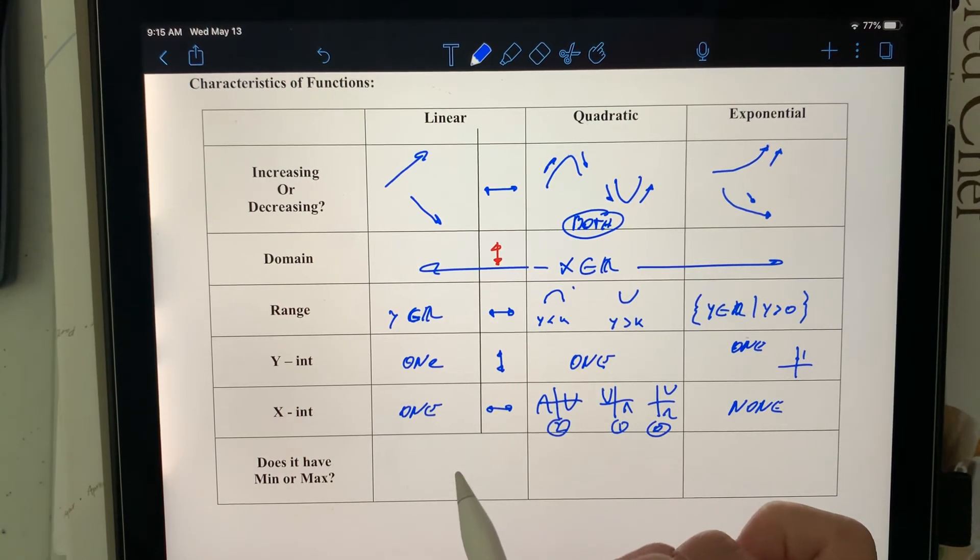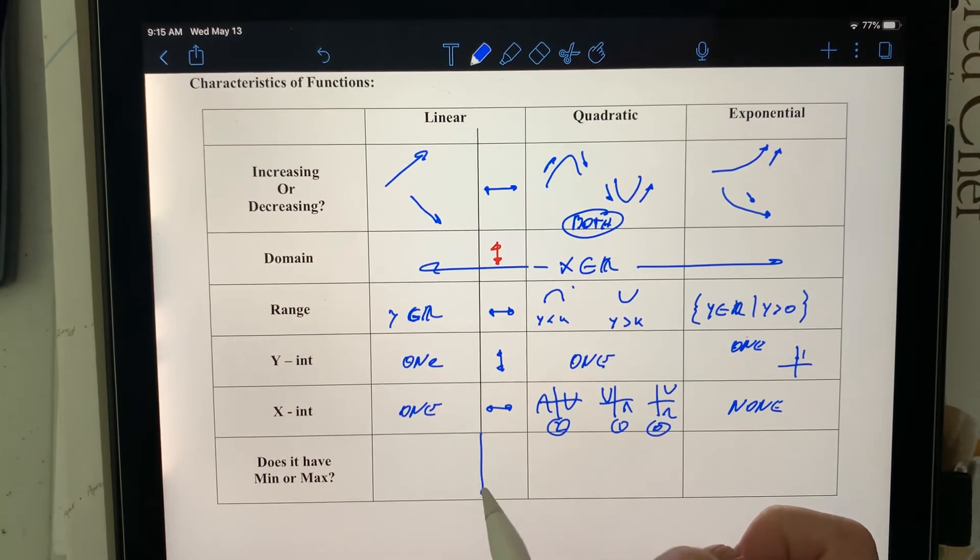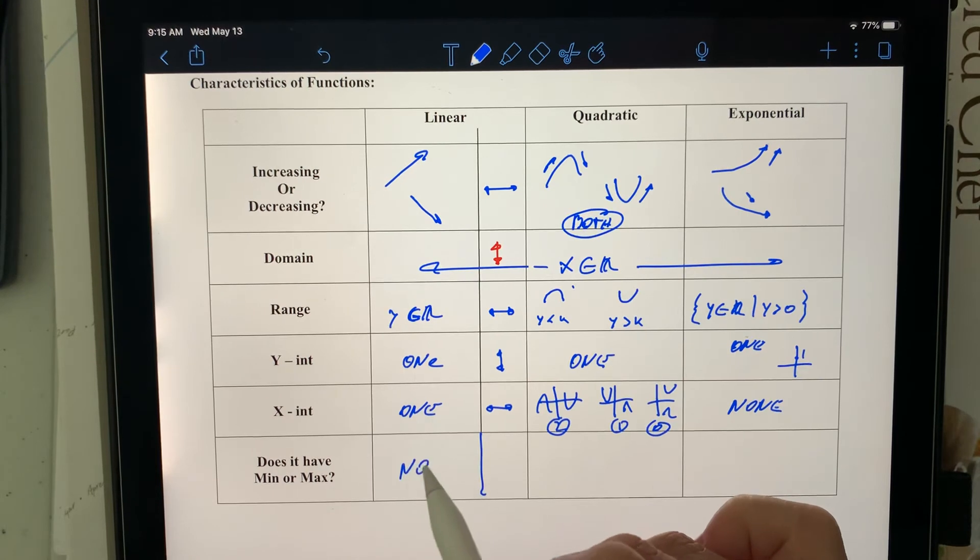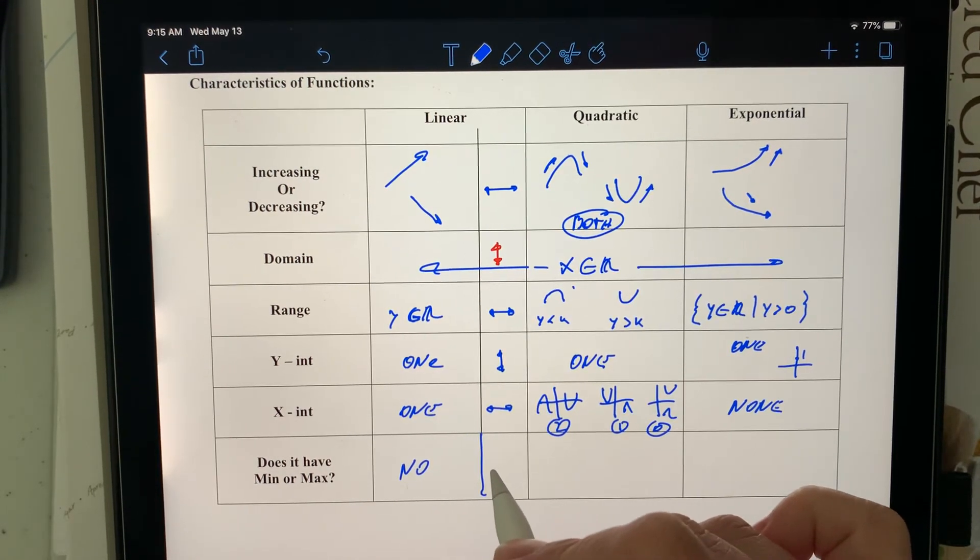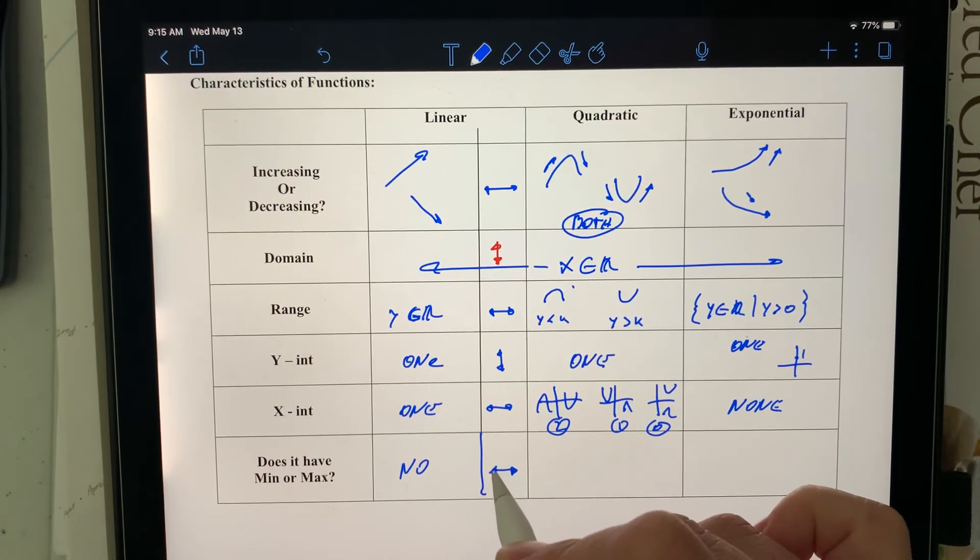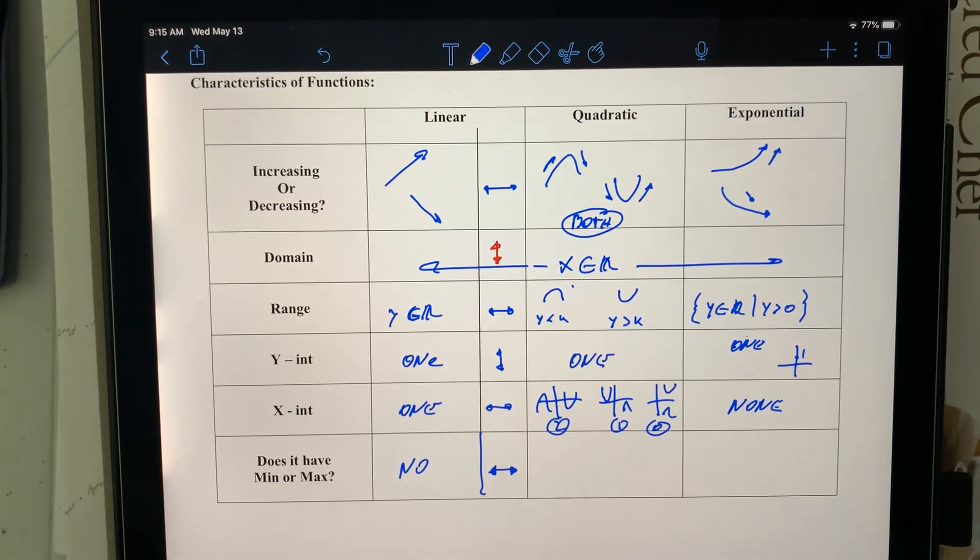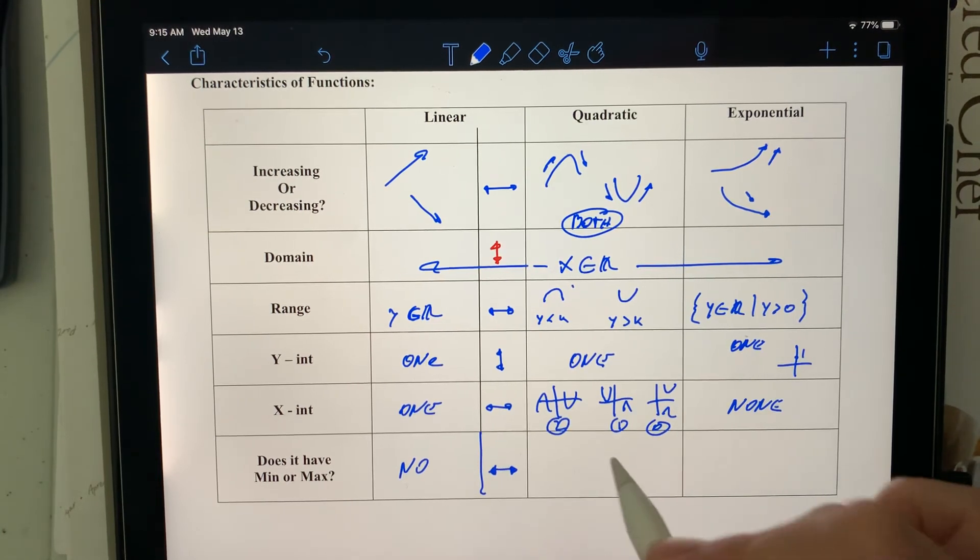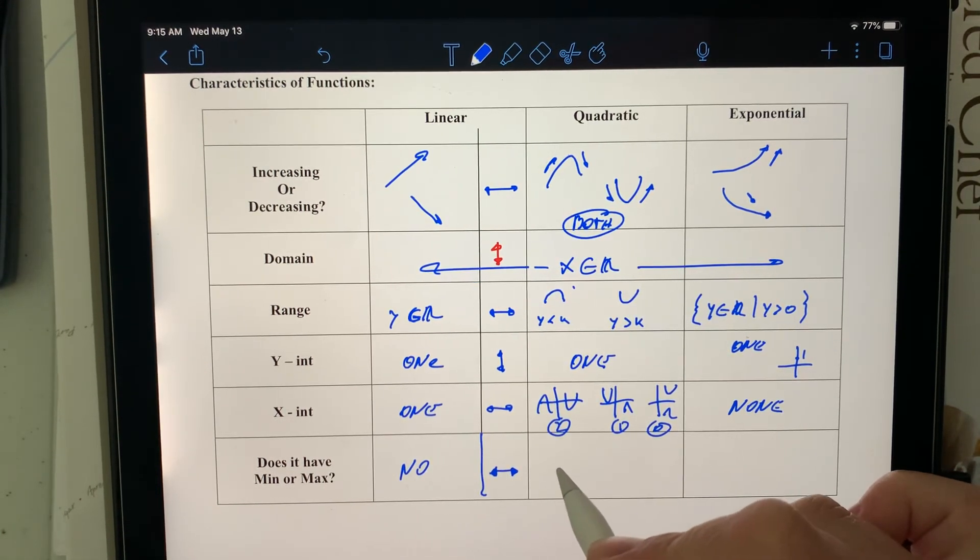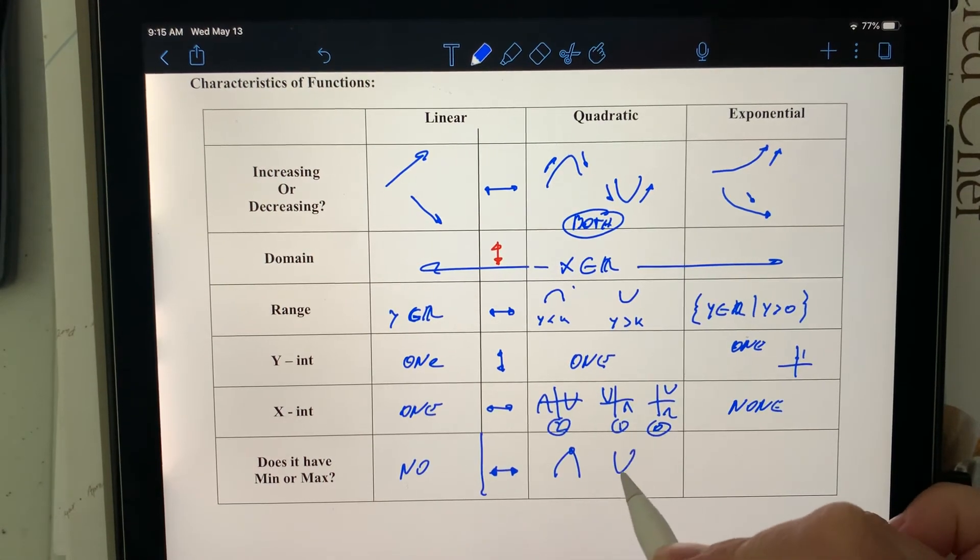Does it have a max or a min? Well, for lines they go up forever and down forever, so there's no max or min. The only exception is the horizontal line. And it's a weird exception, because there's only one value, so that one value is the maximum and the minimum. For quadratics, yes, they have either a max or a min.